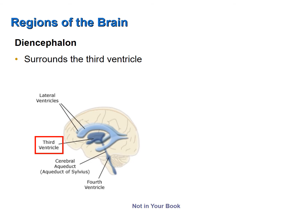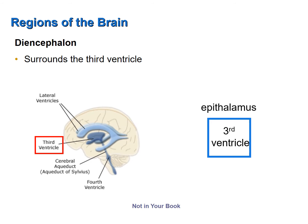It is often difficult to really visualize the components of the diencephalon, so let's relate the different components to the third ventricle, since the diencephalon surrounds it. Here we're looking at a sagittal view of the brain. If the third ventricle was a box or a room, the epithalamus would be the ceiling, the thalamus would be the lateral walls of that room, and the floor would be the hypothalamus.